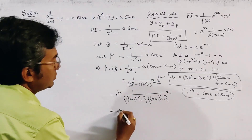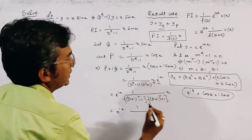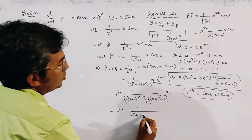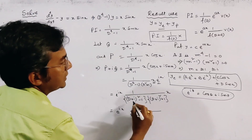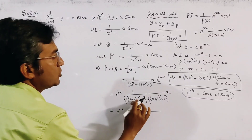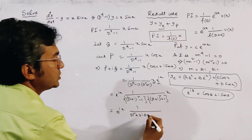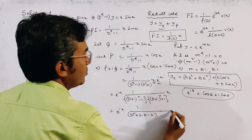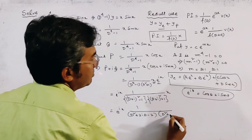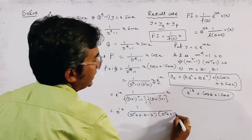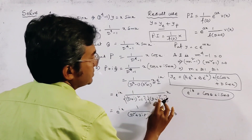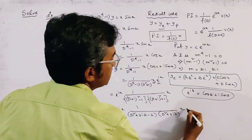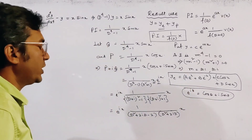Expanding (D+i)^2 = D^2 + 2iD + i^2 = D^2 + 2iD − 1. So (D+i)^2 − 1 gives D^2 + 2iD − 2, and (D+i)^2 + 1 gives D^2 + 2iD. These combine as e^(ix) times 1 over [(D^2 + 2iD − 2)(D^2 + 2iD)] times x.